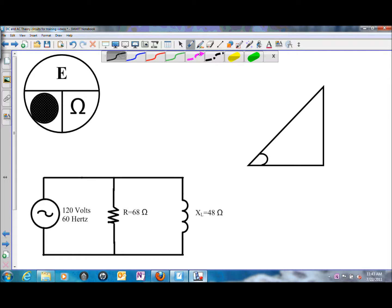We can apply Ohm's law. Current through the resistor is going to be E divided by R, or the source voltage of 120 volts divided by the value of resistance, which is 68 ohms. That will give us a current flow through the resistor of 1.76 amps.